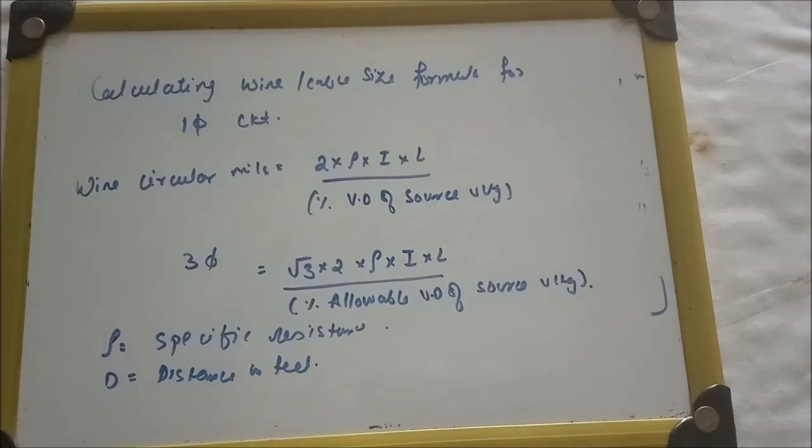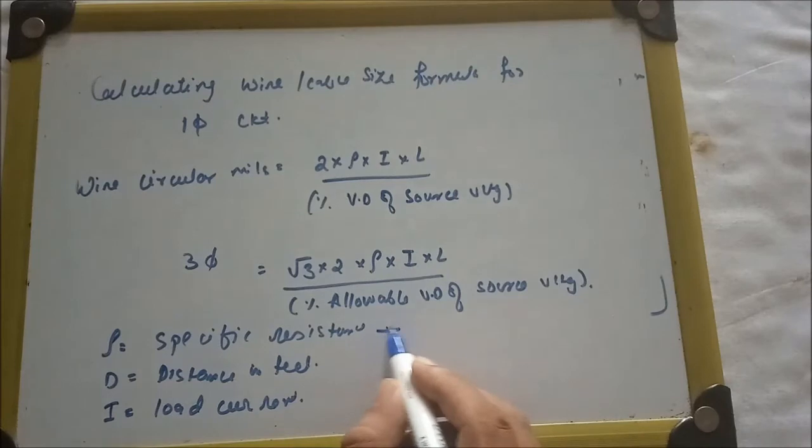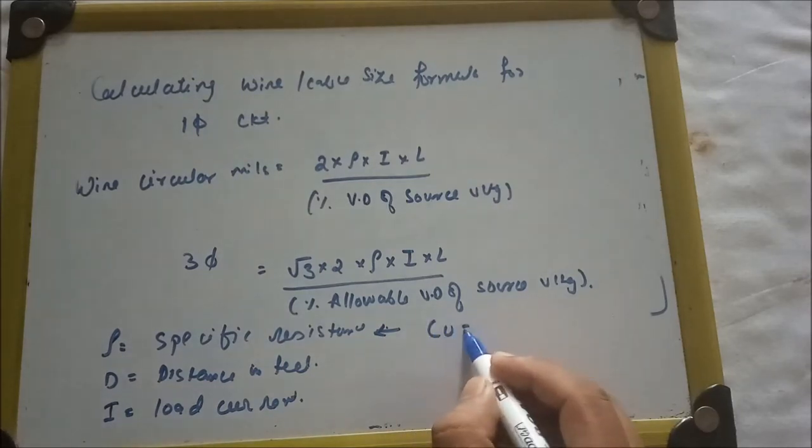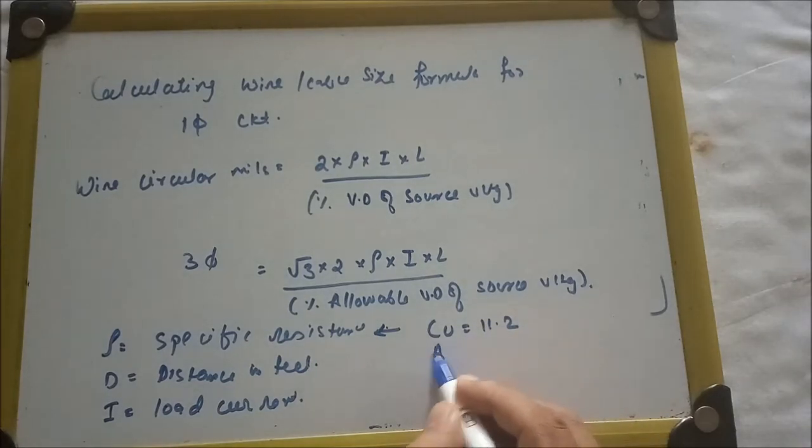I is equal to load current. For specific resistance of a conductor, for copper and aluminum: for copper it is 11.2 and for aluminum it is 17.4. So this is the formula for calculating the wire or cable size.